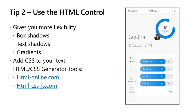Now, I don't want this to scare you if you're not a developer. There are actually tools that will generate HTML and CSS for you, so you don't have to know all the logistics. You can go to one of these websites — I referenced two, but there are a lot more. If you want a box shadow like what Geetha did, you click on box shadows on that website, it shows you a visual cue of how your box shadow looks, you click Generate, and it gives you the HTML to copy and paste into the HTML control of your Power App. Those tools will do all of that for you.